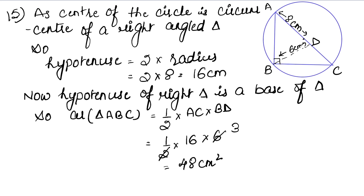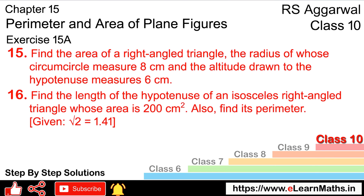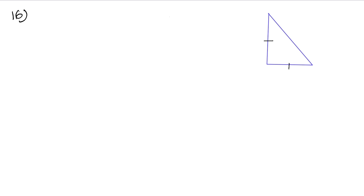48 cm² is the answer. Let's do question number 16 now. Question 16 is: find the length of the hypotenuse of an isosceles right-angled triangle whose area is 200 cm². Also find its perimeter. Take the value of √2 as 1.41.